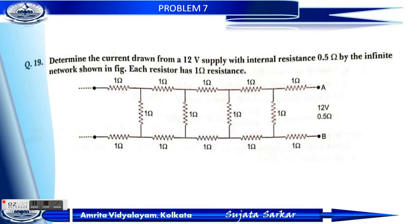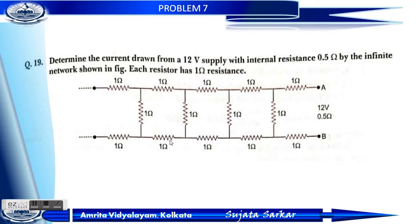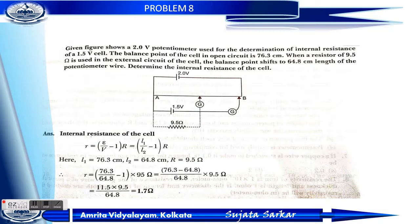Problem 7 (unsolved): Determine the current drawn from a 12 volt supply with internal resistance 0.5 ohm by an infinite network shown in the figure. Each resistor has 1 ohm resistance. Set up the equation and find the value.